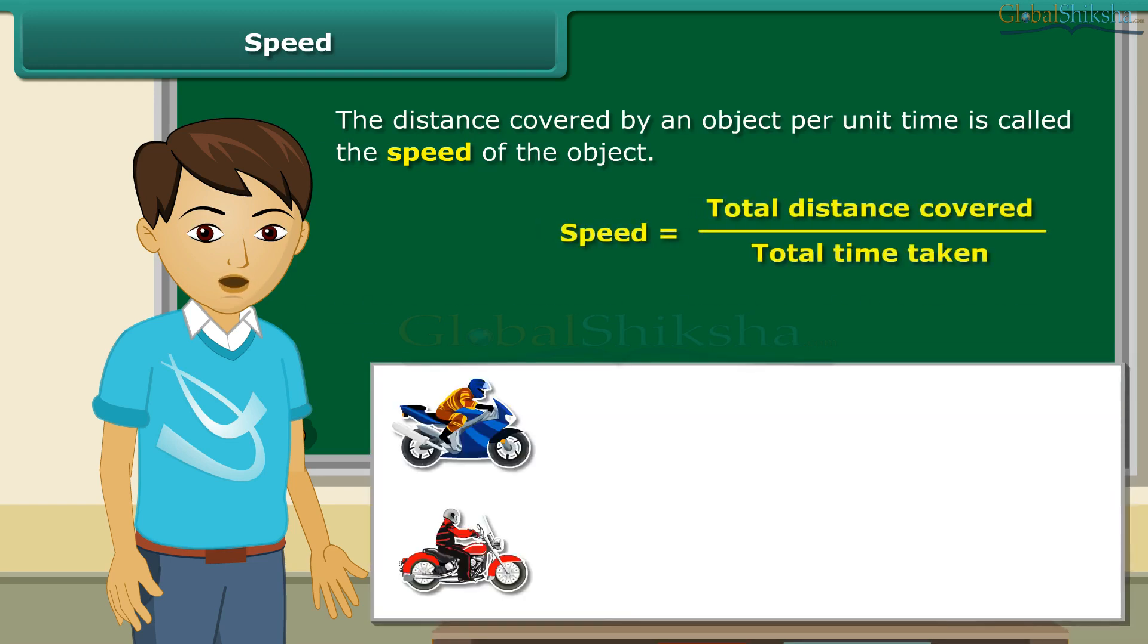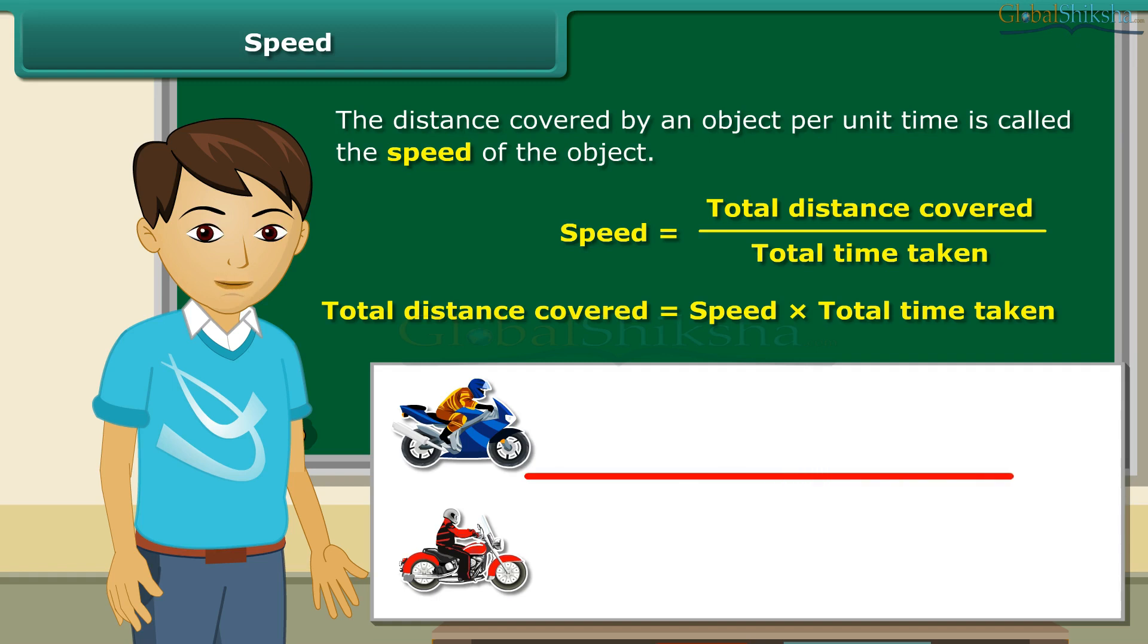Suppose your brother claims that his motorbike is faster than his friend's. His friend denies. You know that your brother's motorbike covers a distance of 60 km in an hour, whereas his friend's bike covers 40 km in one hour. Let us now check the claims of your brother and his friend. The speed of your brother's bike is 60 km per hour and that of his friend's bike is 40 km per hour.